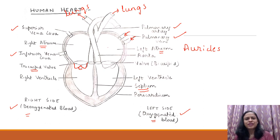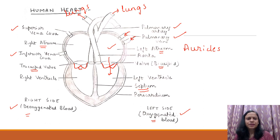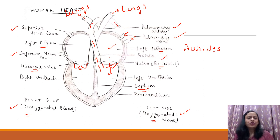The oxygenated blood coming back from the lungs reaches the left atrium through the pulmonary veins. When the left atrium contracts, the blood passes through the bicuspid valve — named because it has two cusps — into the left ventricle. When the left ventricle contracts, the blood goes up through the aorta, which is the largest artery of our body, and is distributed to the whole body. The vena cava are the largest veins of our body.